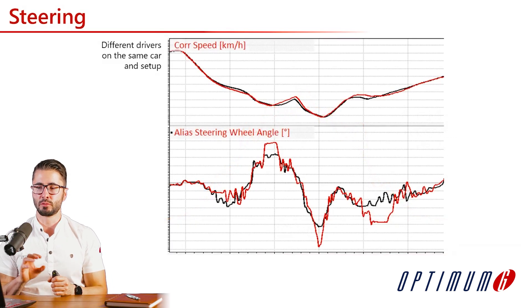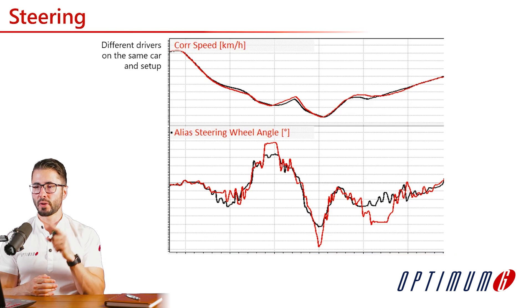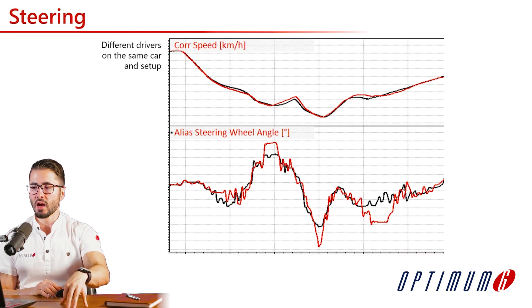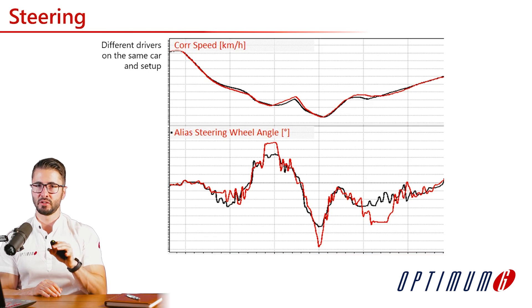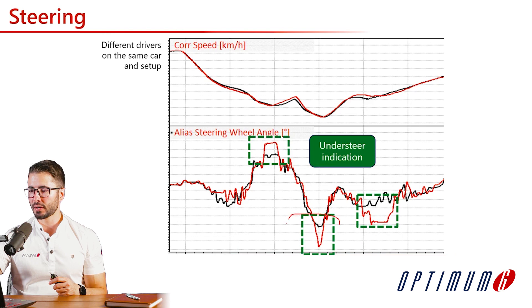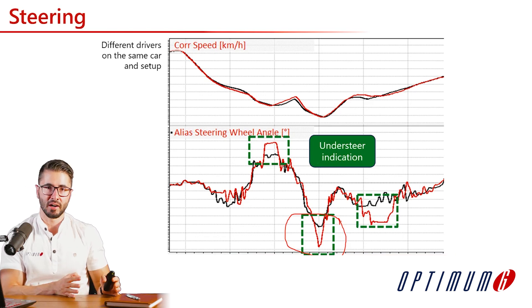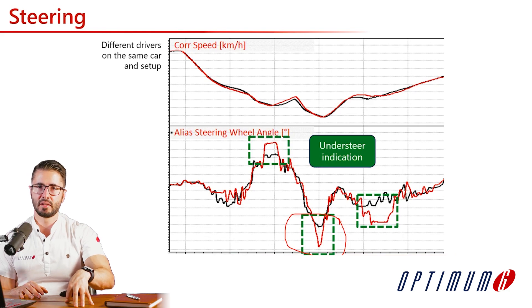Now let's look at real data. We have the reference lap in black and the comparison lap in red, with corrected speed at the top and steering wheel angle at the bottom. We can see straight away a high amount of steering in three corners for the red driver — the more peaky behavior indicating understeer. Even though it is the same car and setup, the driver in red is getting a lot more understeer, which could come from vehicle setup, conditions, tire wear, or the driver himself inducing this understeer.